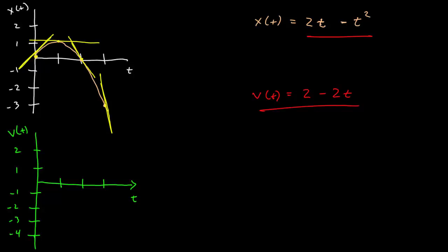So I can go ahead and plot that. At t is equal to 0, this is 2. At t is equal to 1, this is 0. At t is equal to 2, this is negative 2, and at 3, it's negative 4. Here, my velocity is now a straight line that's going from positive 2 to negative 4.